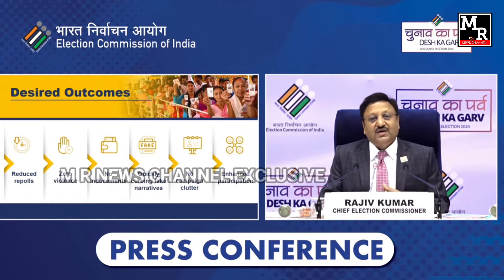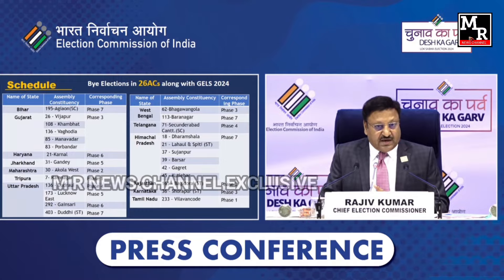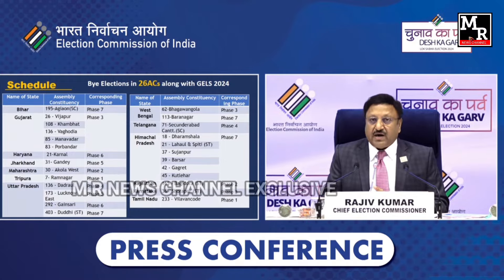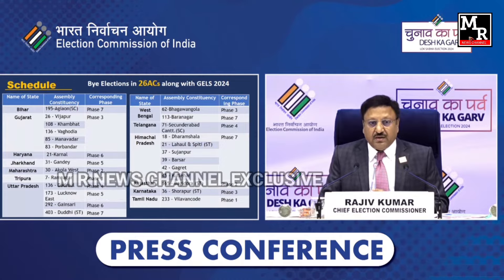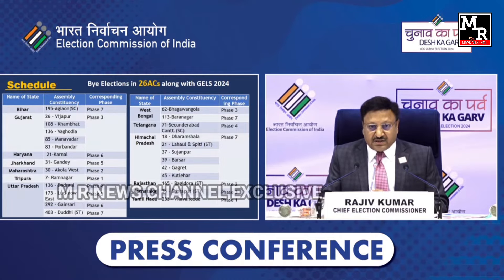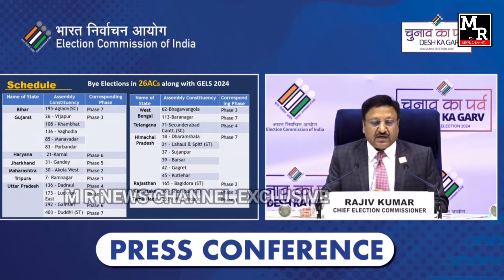So now, we'll be announcing the schedule in three phases. First, for the by-elections. There are 26 assembly constituencies in the country where by-polls are due. Bihar, Gujarat, Haryana, Jharkhand, Maharashtra, Tripura, Uttar Pradesh, West Bengal, Telangana, Himachal Pradesh, Rajasthan, Karnataka, Tamil Nadu.